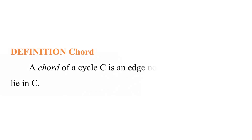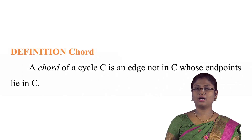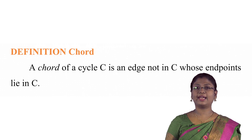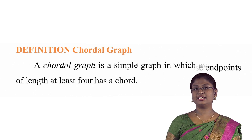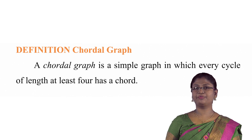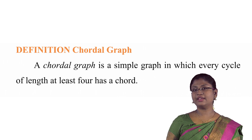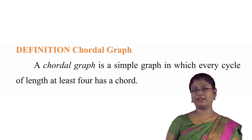First, let us see what is meant by chord. Definition of a chord: a chord of a cycle C is an edge not in C whose endpoints lie in C. Now let us see the definition of the chordal graph. A chordal graph is a simple graph in which every cycle of length at least 4 has a chord.